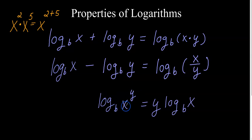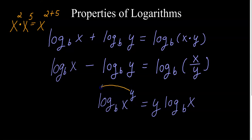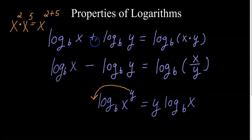This last property says that if you have log base B of X to the power of Y, you can actually take this power of Y and move it in front of the logarithm. In other words, log base B of X to the power of Y equals Y times log base B of X. Let's look at some examples — hopefully this will make more sense.